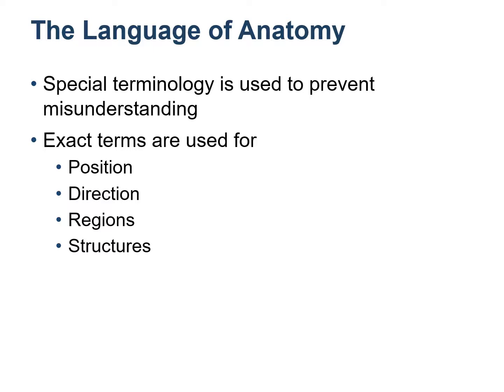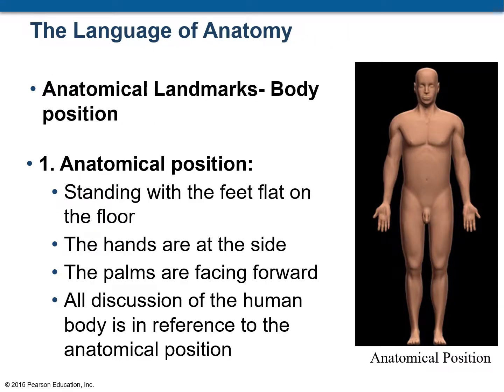Anatomy uses special terminology. There are special terms to describe the position, direction, and the regions — that means the areas or different structures. So these terms define the location of body parts and body markings. We will start with positional terms.